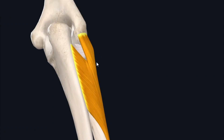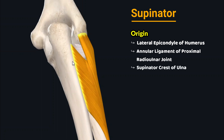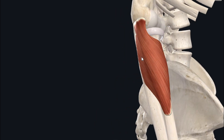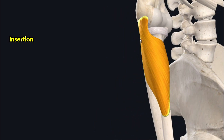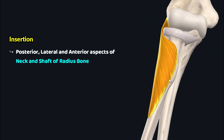Our first muscle of discussion is the supinator muscle. This muscle has a broad spectrum of origin and it originates from the lateral epicondyle of the humerus, the annular ligament of the proximal radio-ulnar joint, and the supinator crest of the ulna. After origin, the fibers of this muscle travel inferolaterally over the elbow joint and spiral over the proximal one-third of the radius to insert onto the posterior, lateral, and anterior aspects of the neck and shaft of the radius bone.